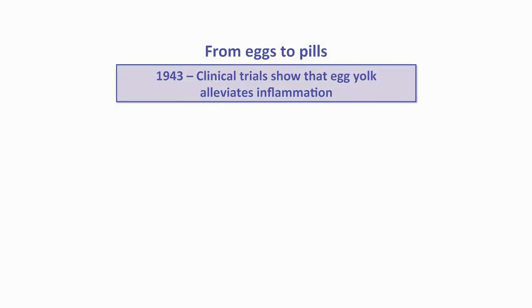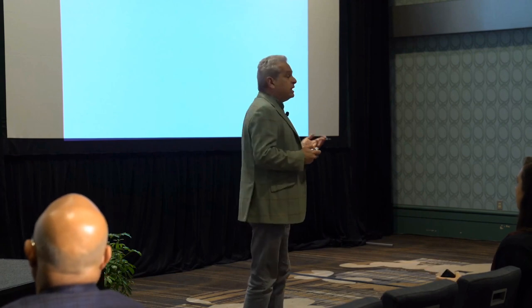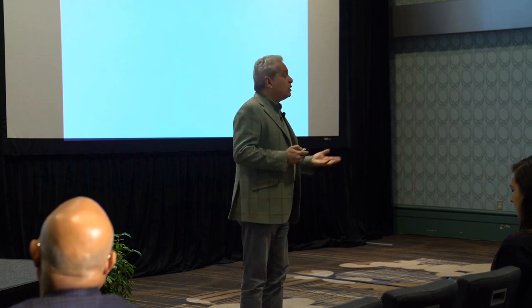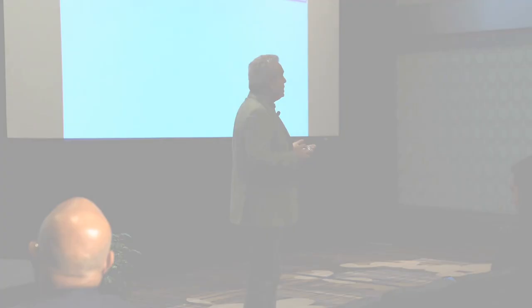A history that actually starts a fairly long time ago, in the 1940s. During the war, when pharmaceuticals were scarce, it was discovered that egg yolk is an anti-inflammatory food. That discovery brought scientists to ask the question: what chemical component of egg yolk is responsible for the anti-inflammatory effects?